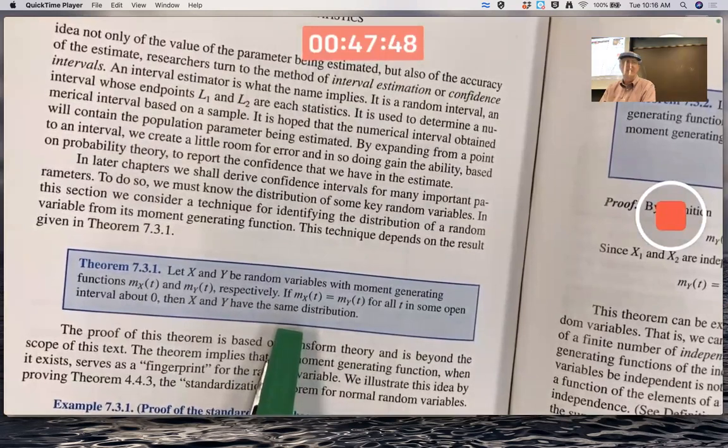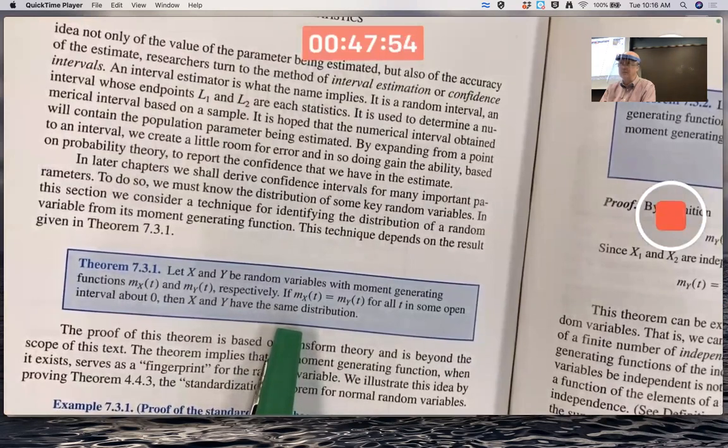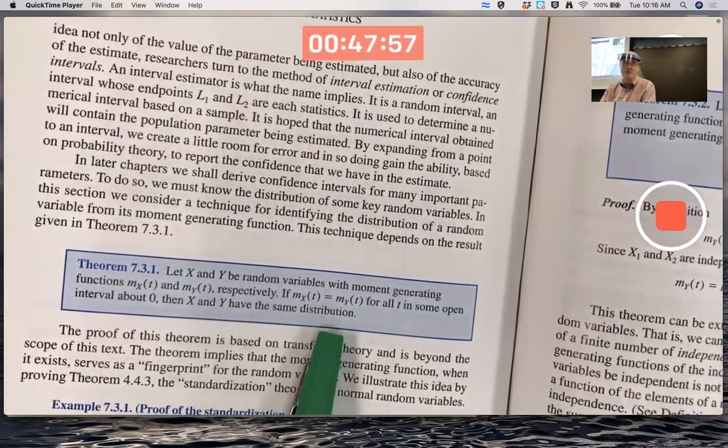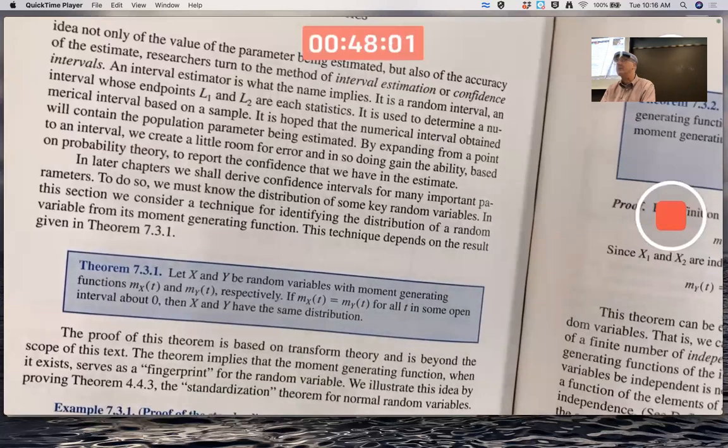You don't say they're the same random variable because we're given a situation they could take on different values because it's randomness. But you say they have the same distribution, which means they have the same PDF, the same CDF, the same mean, the same variance, etc.